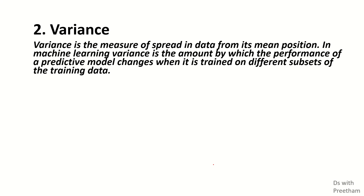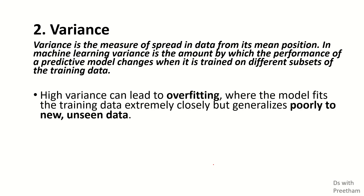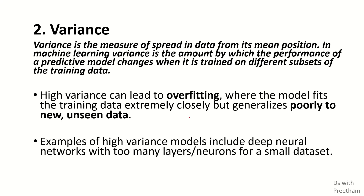High variance can lead to overfitting — training 100% — where the model fits extremely closely to training data but generalizes poorly to new or unseen data.